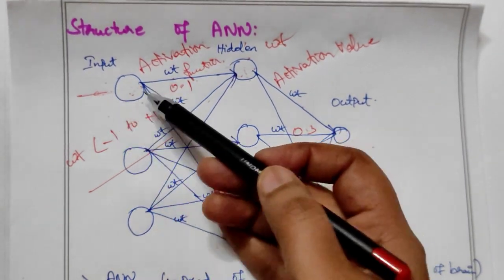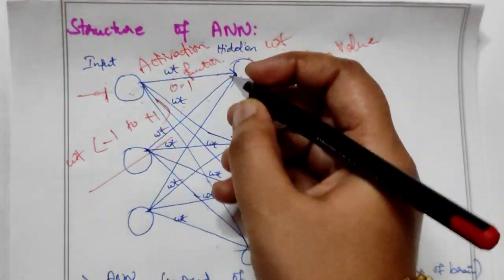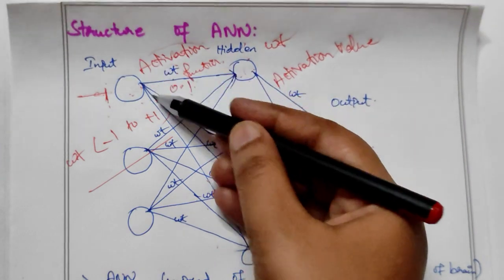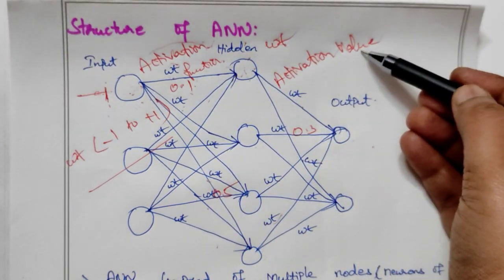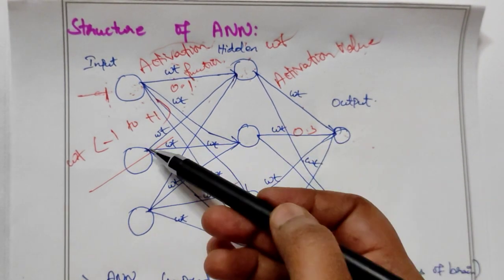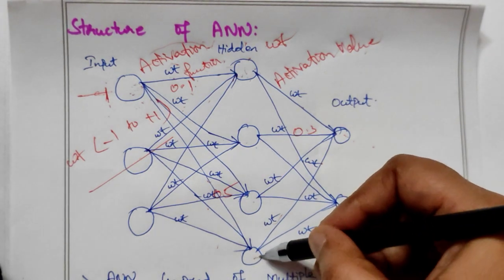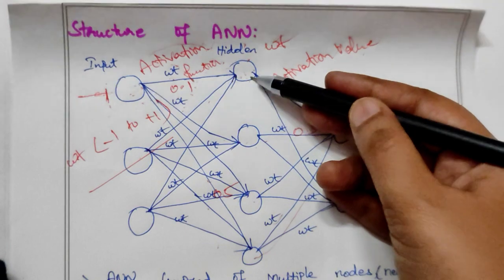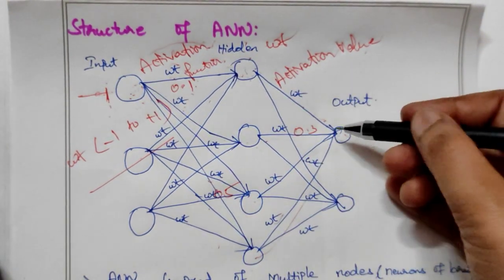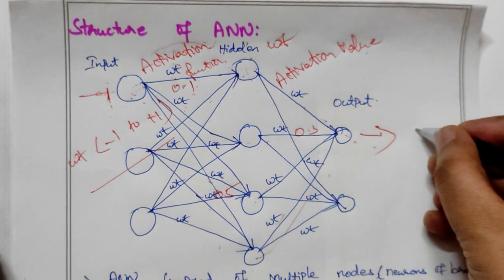In the input layer, we receive input. The input is multiplied by the weight to perform the operation. For example, the input is 1.1 and the weight value is 0.1. The operation performed is the activation function, and the output is the activation value. This activation value passes from the input through the hidden layer to the output layer.